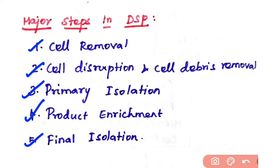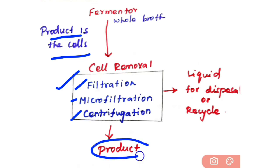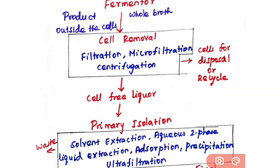If the product is the cell biomass itself, very little or no downstream processing is required. You simply remove the cell mass from the liquid using filtration, microfiltration, or centrifugation. The cell mass is your product, and you will dispose of or recycle the liquid. This is a very simple process.